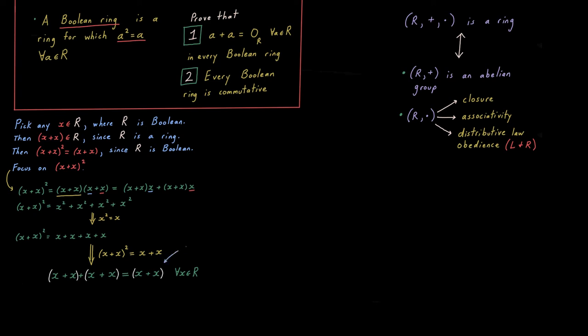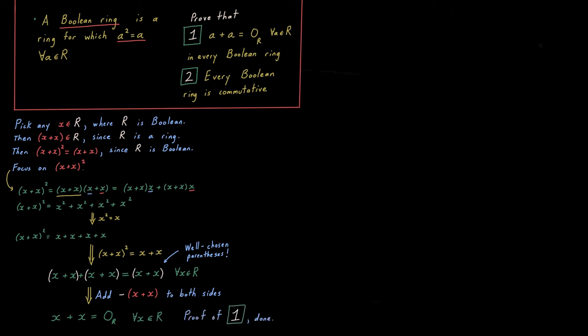And with the significant rewriting process out of the way, slap some well-chosen sets of parentheses into this equation and add to both sides the additive inverse of X plus X. This allows us to prove statement number one in one fell swoop. X plus X equals the additive identity element for all elements X in our ring. Proof of one is done.